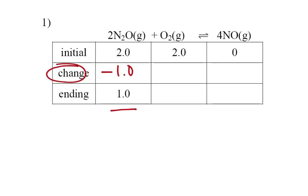I have a 2 to 1 to 4 ratio. 2 is to 4 as 1 is to 2, and we're making that this time. 2 is to 1 as 1 is to 1/2, so negative 0.5. 2 minus 0.5, I have 1.5 at equilibrium. 0 plus 2, so I have 2 at equilibrium. Those are my three values.